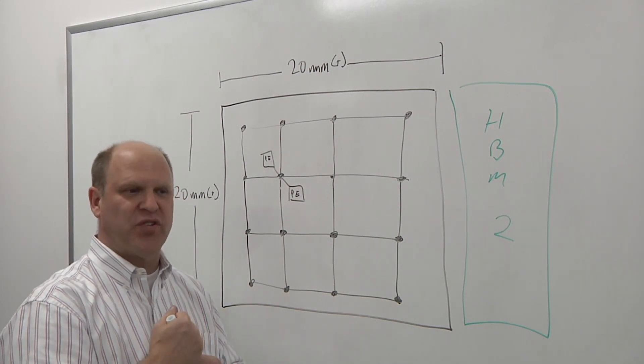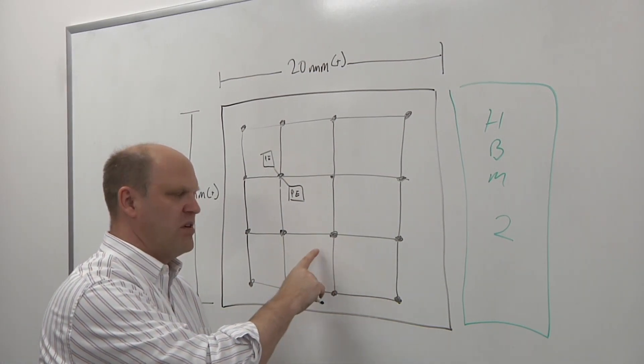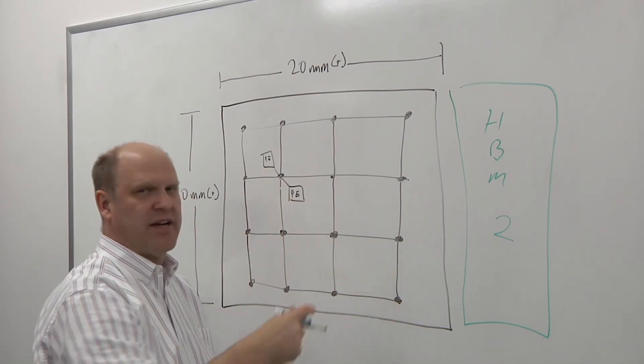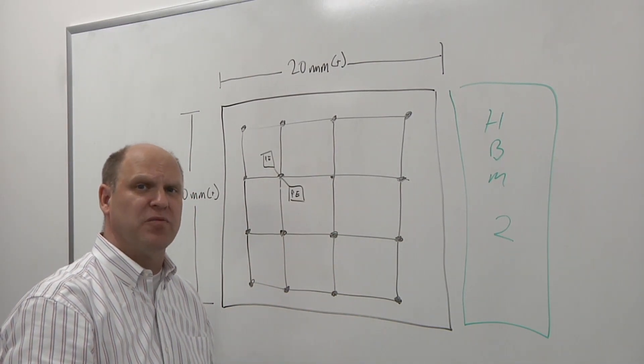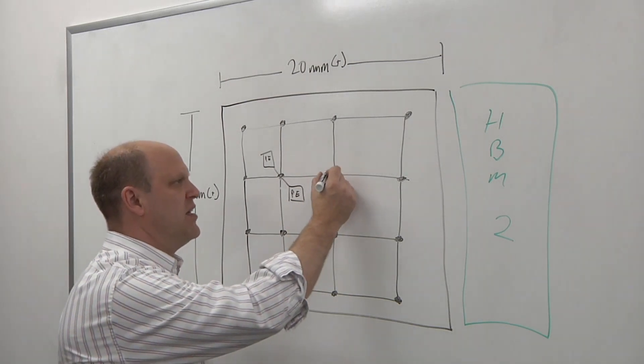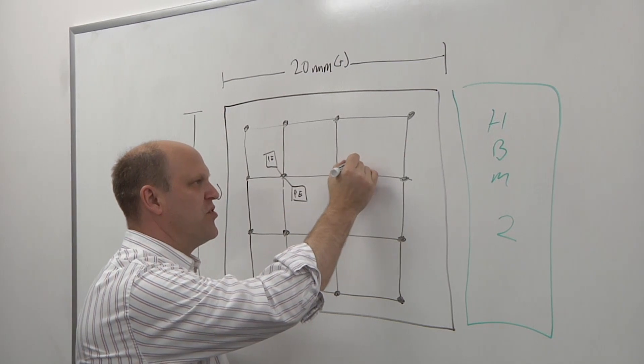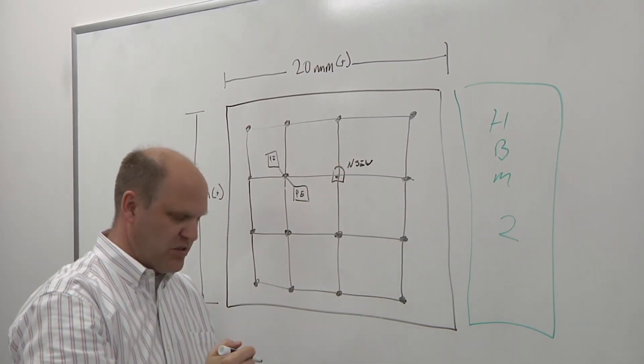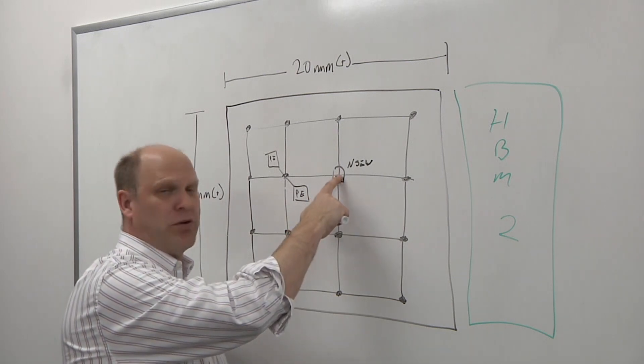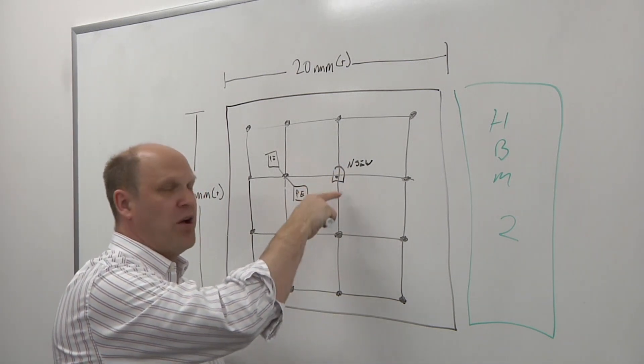Now, one of the things that's different about the switches within this mesh network as compared to something that you would see in, for example, a digital baseband or a mobile phone or consumer electronics product is that each one of these is a north-south-east-west router.